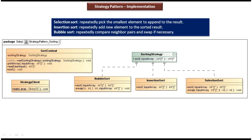Out of these three sorting algorithms, insertion sort is faster than selection sort and bubble sort, and selection sort algorithm is faster than bubble sort but slower than insertion sort. On the left side you can see a sort context — the client will choose one of the sorting algorithms and set the sorting strategy in the sort context by calling the set sorting strategy method. Once the sorting strategy is defined, the client will call the sort method of sort context to sort the input array.